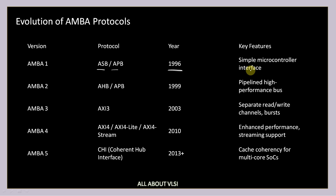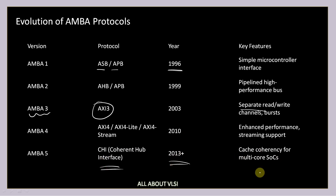In 2003, AMBA version 3 introduced AXI3 with separate read and write channels and burst support. AMBA 4 in 2010 brought AXI4, AXI4-Lite, and AXI4-Stream with enhanced performance and streaming support. In 2013, AMBA 5 introduced CHI — Coherent Hub Interface — supporting cache coherency for multiple core sources.